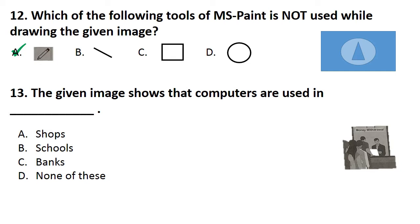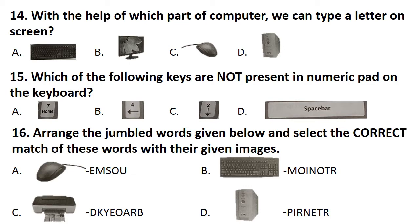Question number 13, the given image shows that computers are used in - answer is option C, that is banks. With the help of which part of computer we can type a letter on screen? Answer is option A, keyboard.